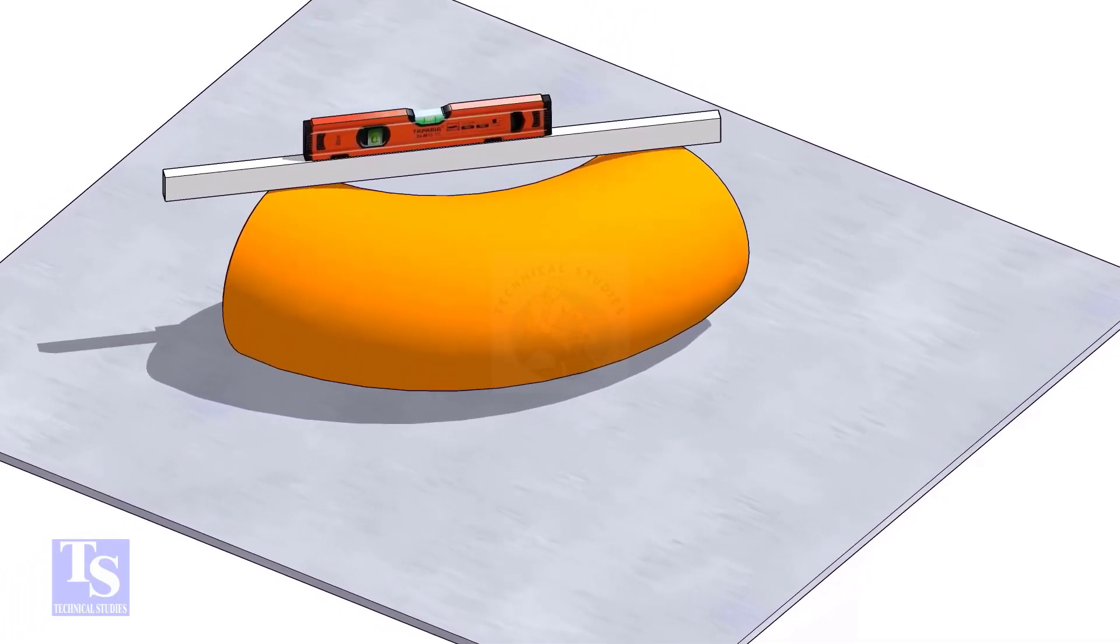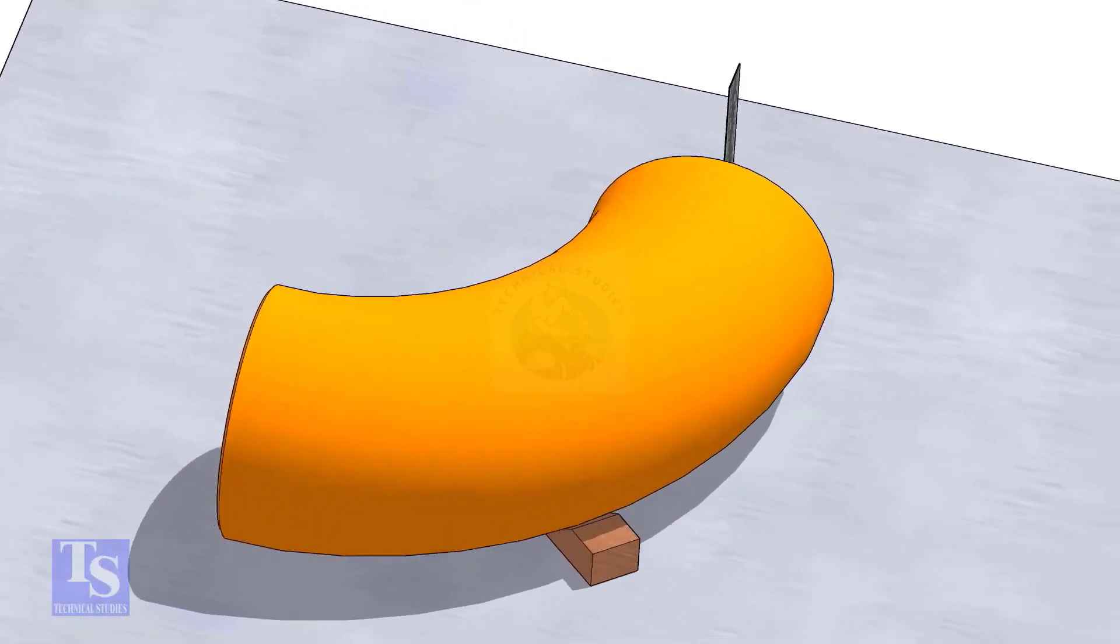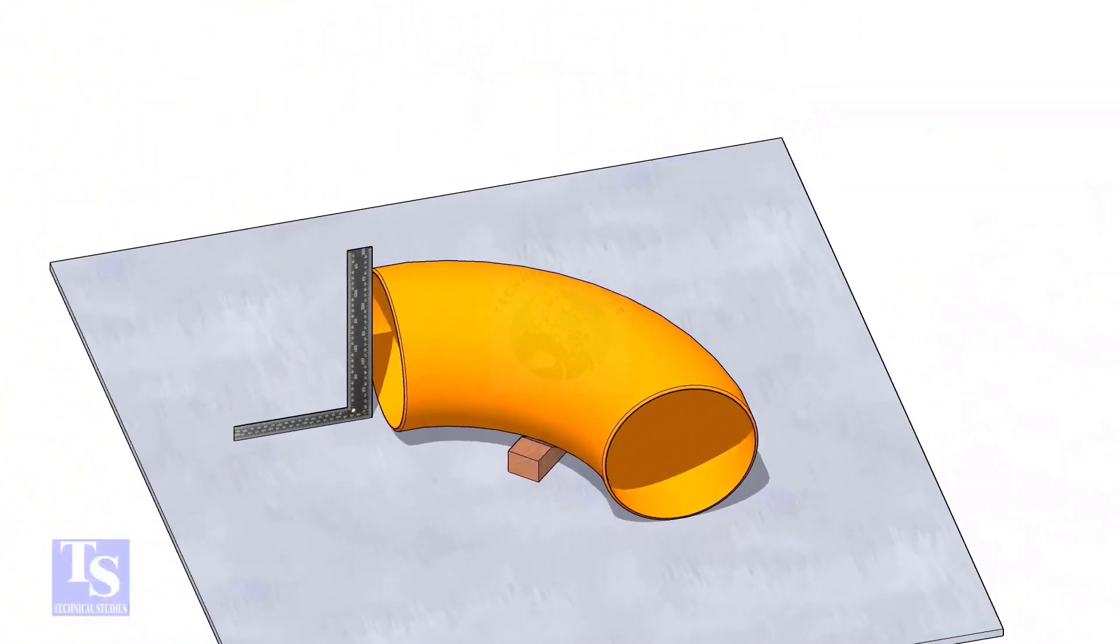Check the level of the elbow. Check the squareness of the face of the elbow with the plate. If necessary, put some packing below as shown.